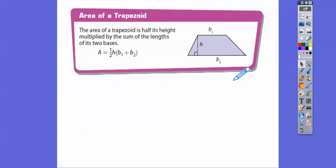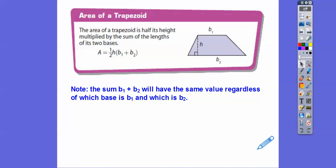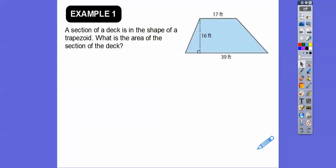So the formula is: area equals one-half times the height times the sum of the two bases. It doesn't matter which one you call base 1 and base 2, because B1 plus B2 is the same as B2 plus B1. For example, 2 plus 5 is 7, and 5 plus 2 is also 7.